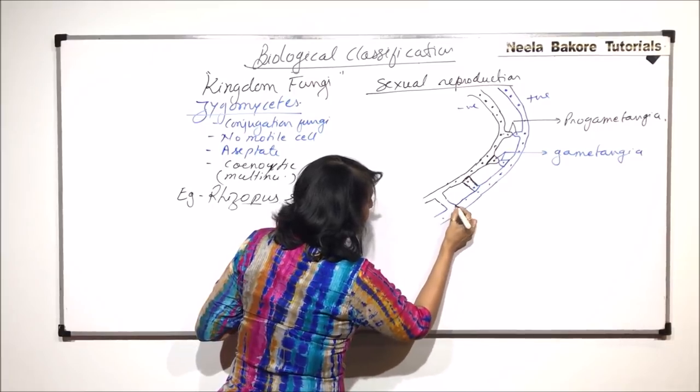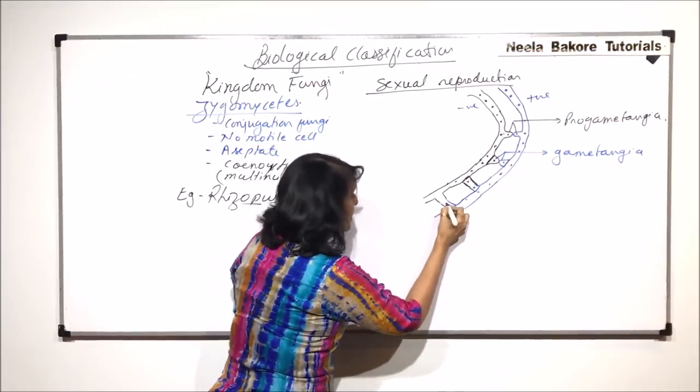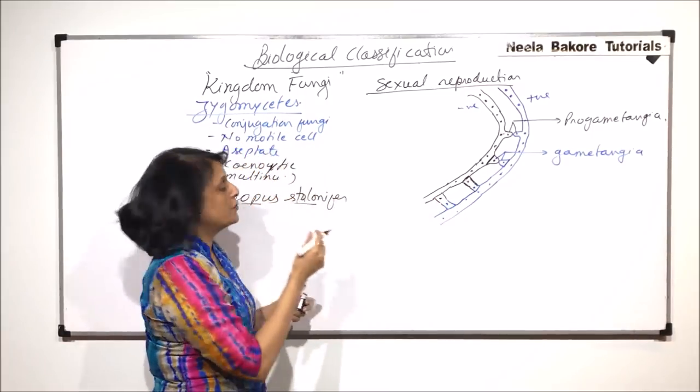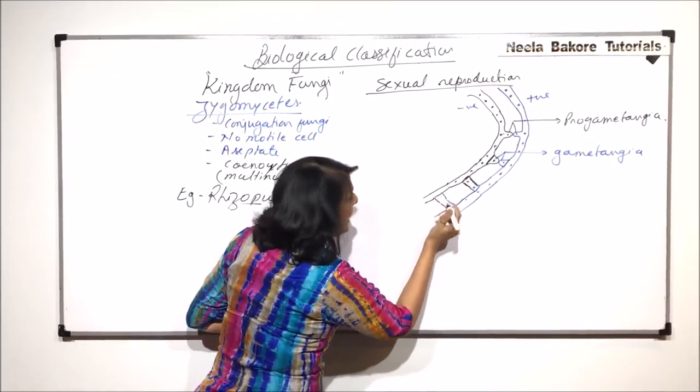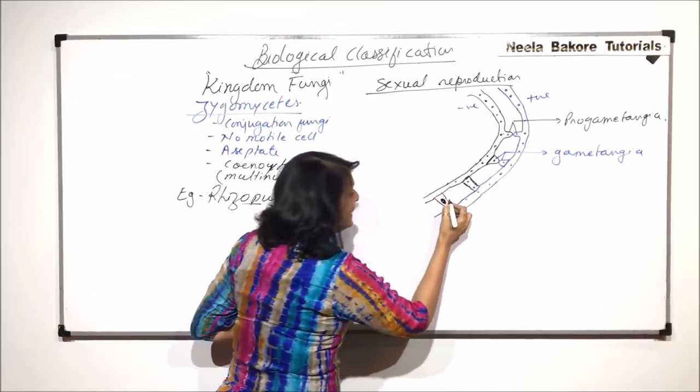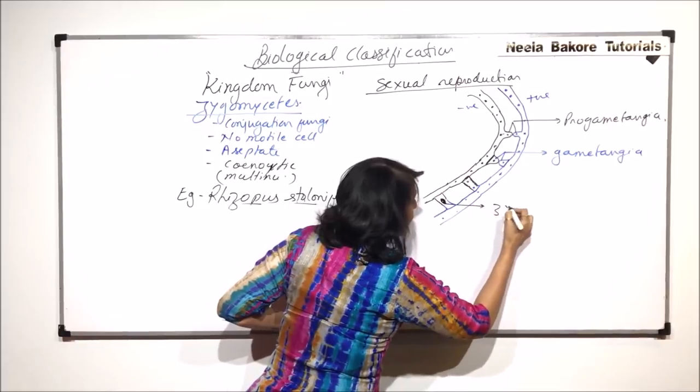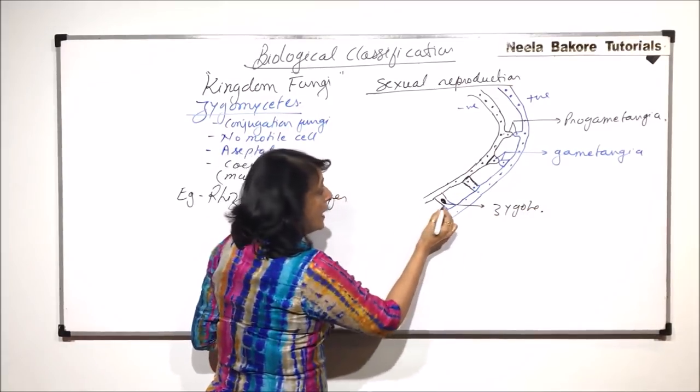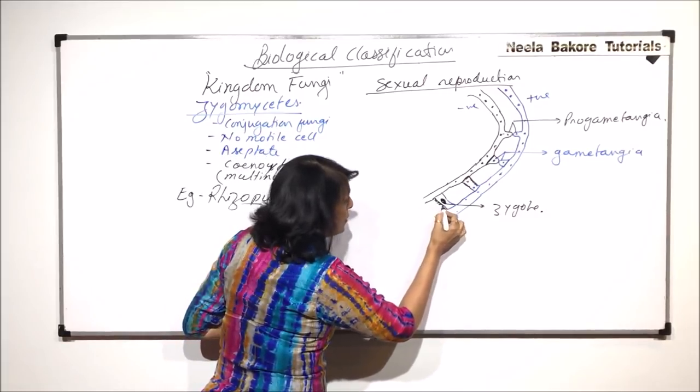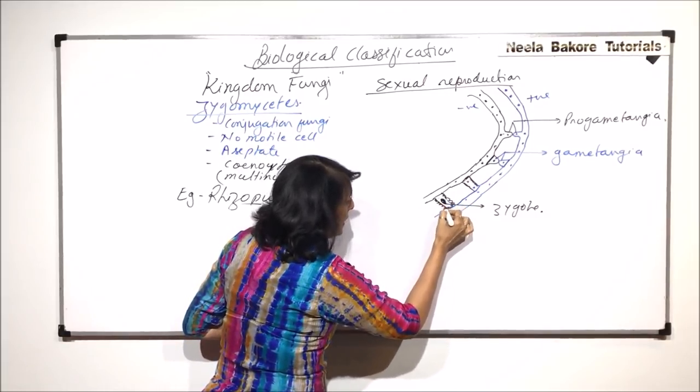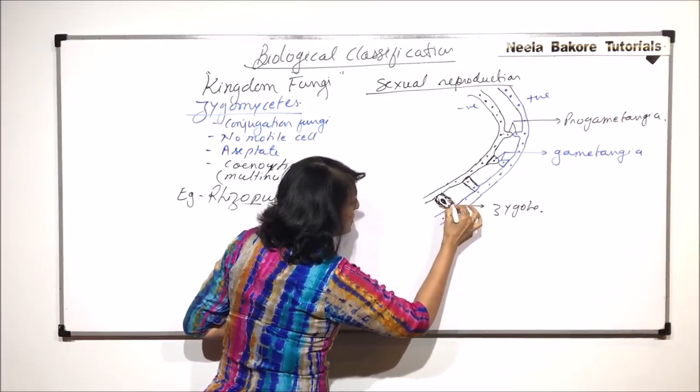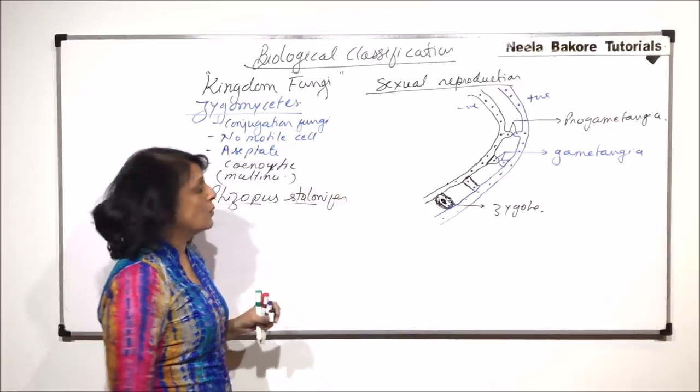So here, this is the nucleus of positive strain and this is the nucleus of the negative strain. These two nuclei are now going to fuse. And this structure is the zygote with a fused nucleus. And now, this structure is going to secrete a thick wall around itself. So now, this thick structure which is visible to us is known as the zygote.